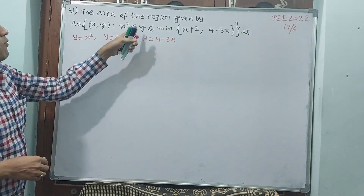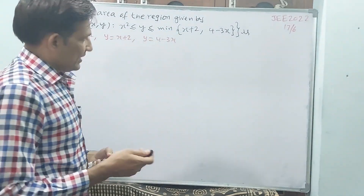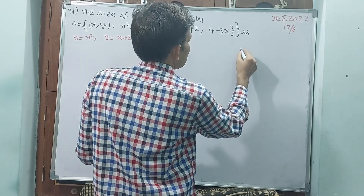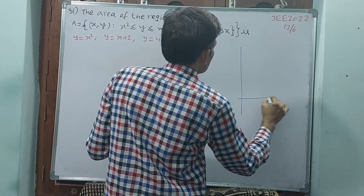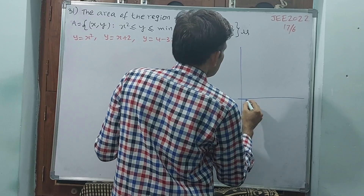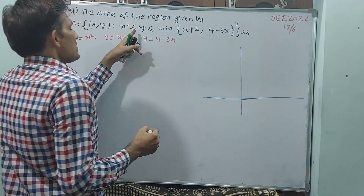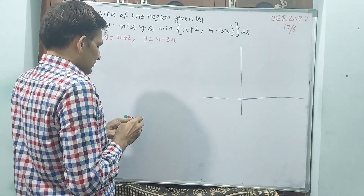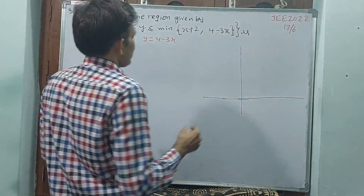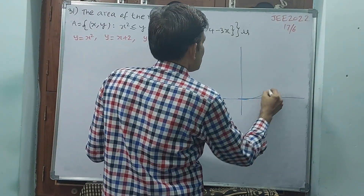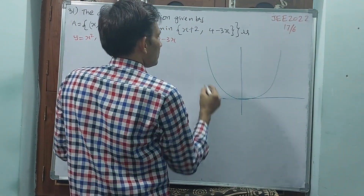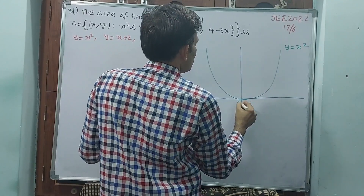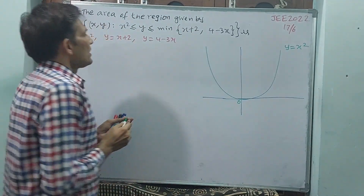By inspection, we need to consider three curves: y = x², y = x+2, and y = 4−3x. First, I will draw the y = x² graph — this is a parabola with vertex at the origin, where x can be positive or negative but y is always x².